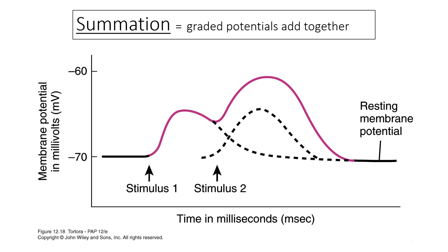This slide illustrates the concept of summation. Summation refers to the fact that graded potentials — the stimuli acting on a neuron — add together. This is important because if there is enough stimulus on the neuron, and we depolarize the inside of the cell membrane to negative 55 millivolts, an action potential will be created. Summation refers to different stimuli adding together until there is enough to generate an action potential.